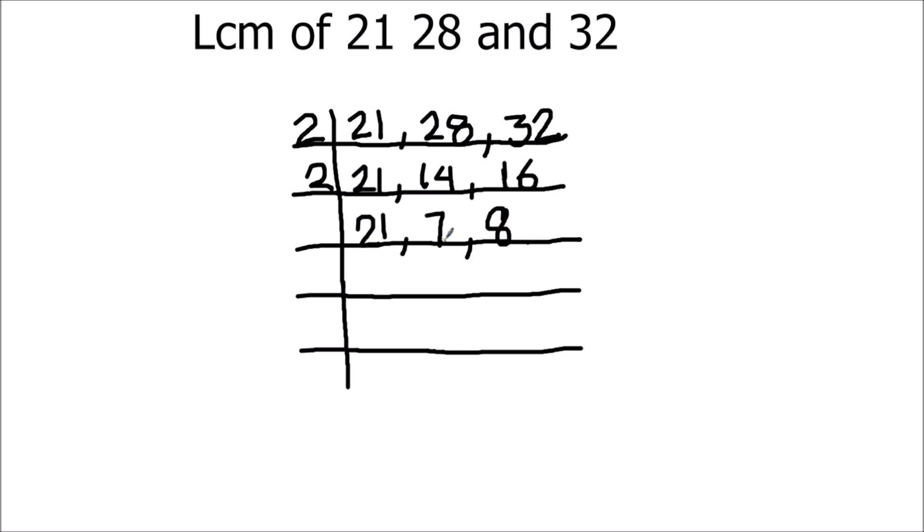Now 21 and 7 are divisible by 7, so we'll use 7 to divide these two numbers. 7 times 3 is 21, and 7 times 1 is 7. 8 is not fully divisible by 7, so we write it as is.